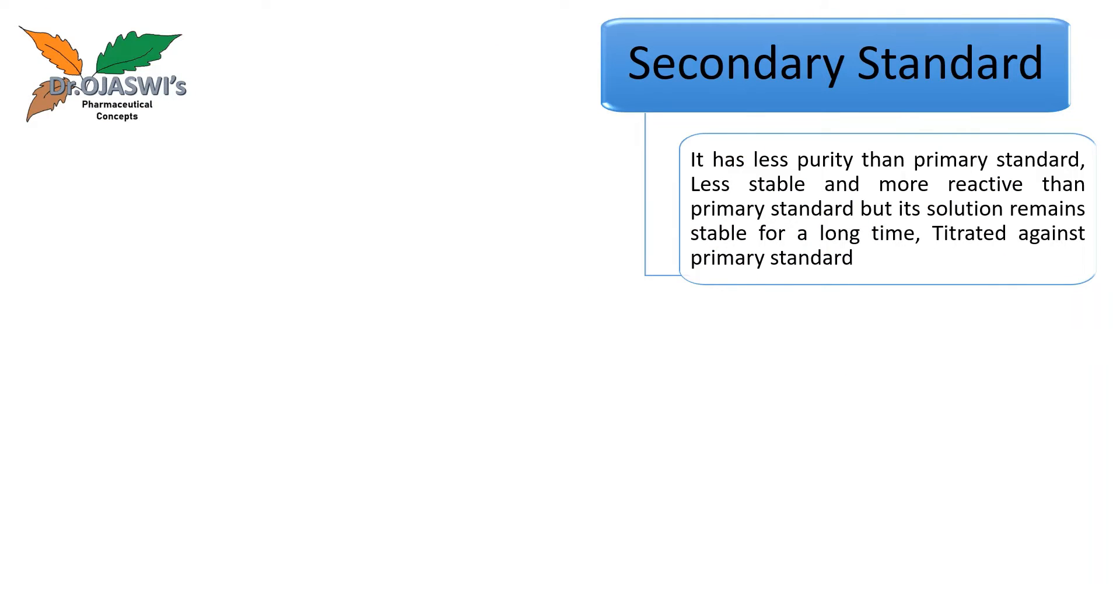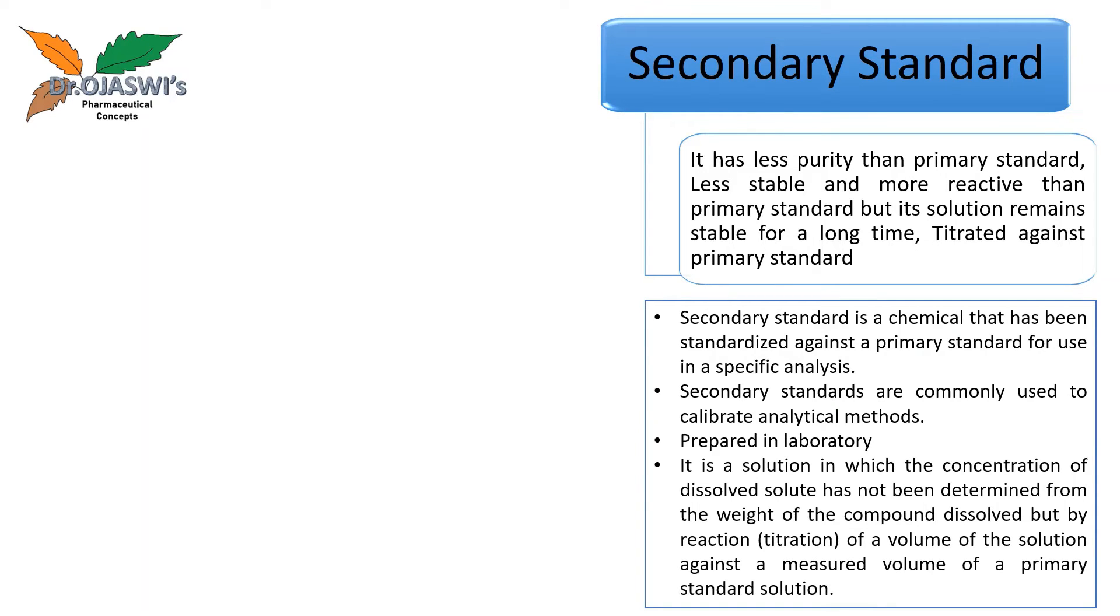Let us see some of the examples of secondary standards and their characteristics. We have seen that these are titrated against primary standards. What does this statement mean? This means, secondary standard is a chemical that has been standardized against primary standard for its use in specific analysis. That means, standardization means...